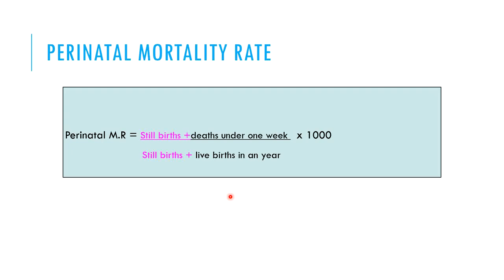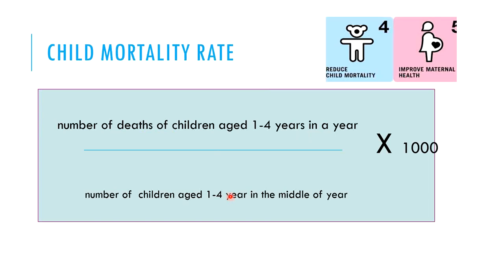Perinatal mortality rate reflects poor healthcare service provision during delivery. It is calculated as: stillbirths plus deaths under one week of a live born, divided by the total number of stillbirths plus total number of live births in a year, multiplied by 1,000. It reflects inadequate healthcare service provision during the natal period to pregnant ladies and is a very important indicator.